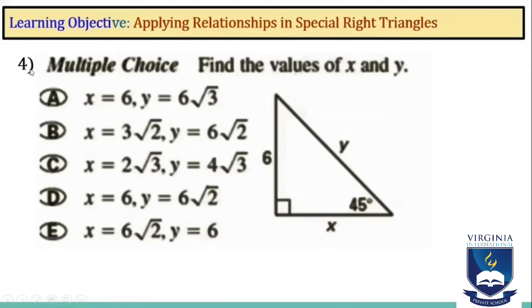Question number 4, multiple choice: Find the values of x and y. Here we have this triangle and we are going to use the theorem. We have the leg equals 6, so the other leg will also equal 6. And for the hypotenuse, it will equal 6 square root of 2, so the correct answer is D: x equals 6, y equals 6 square root of 2.